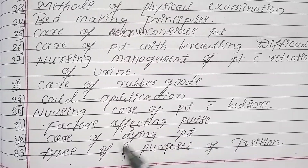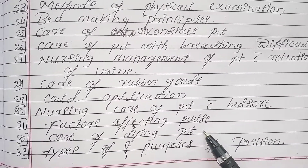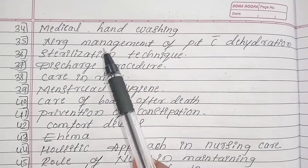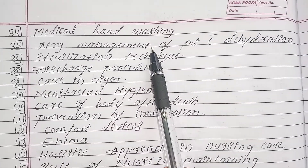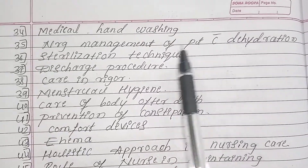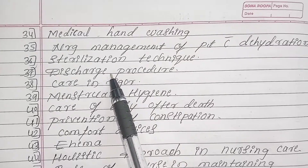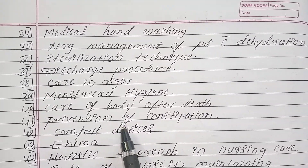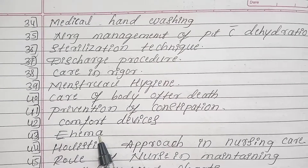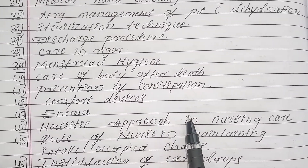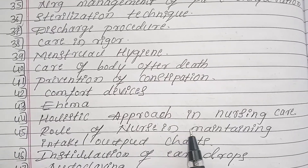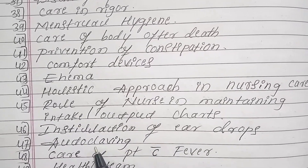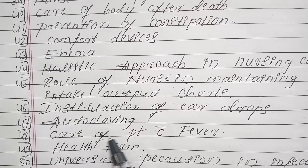Next: factors affecting pulse. Next: care of dying patients. Next: types and purpose of positions. Next: medical hand washing. Next: nursing management of patient with dehydration. Next: sterilization technique, discharge procedure, care in rigor, menstrual hygiene, care of body after death, prevention of constipation, comfort devices, enema. Next: holistic approach in nursing care. Next: rule of nurse in maintaining intake and output charts. Next: installation of ear drops. Next: autoclaving.